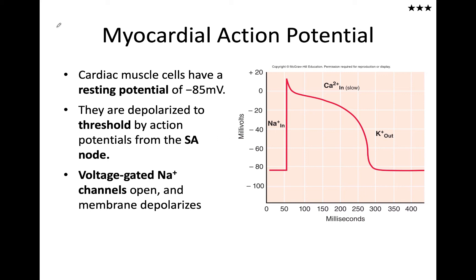The cardiac muscle cell has a resting membrane potential of -85mV — that should ring a bell, as it is also the resting membrane potential of skeletal muscle. The contractile fiber does have a true resting potential; you'll notice it's not drifting upward like the pacemaker potential. Once we reach threshold from that electrical signal passing through the gap junctions into the contractile cell, we get depolarization.